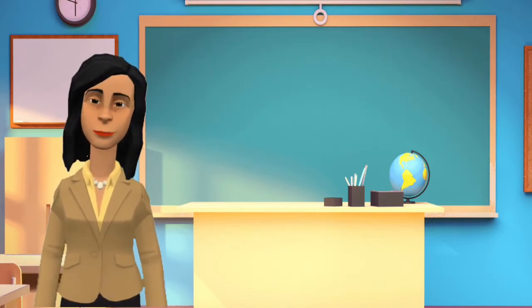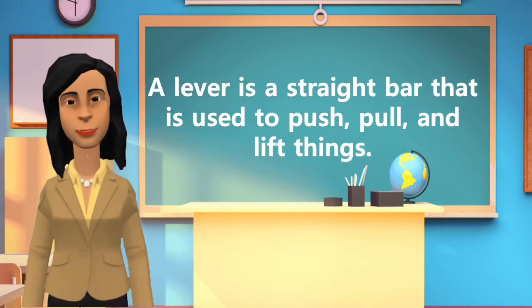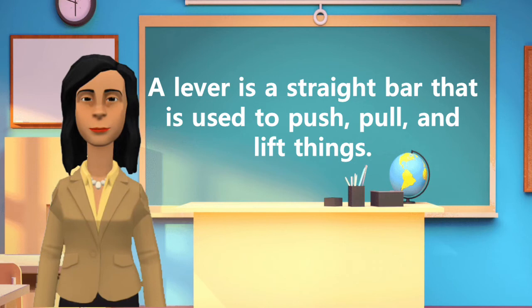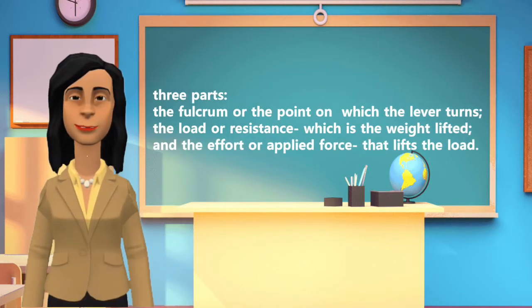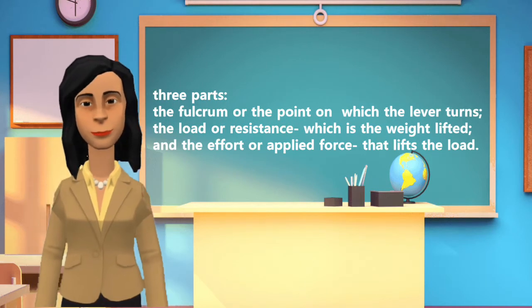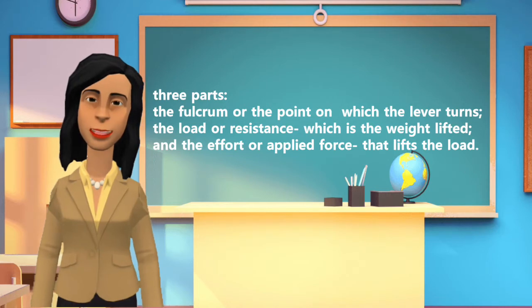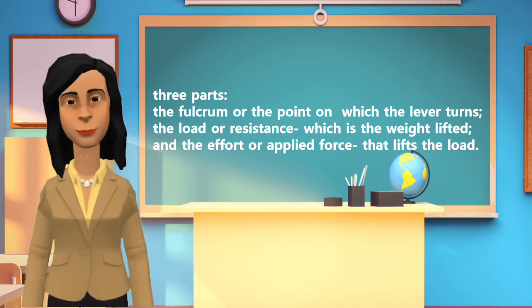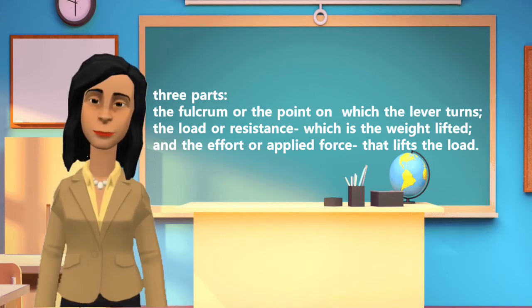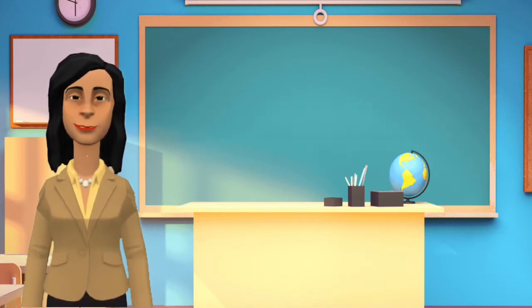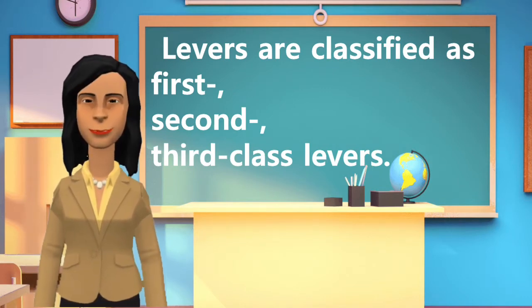What's new: a lever is a straight bar that is used to push, pull, and lift things. It has three parts: the fulcrum or the point on which the lever turns, the load or resistance which is the weight lifted, and the effort or the applied force that lifts the load.